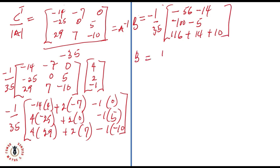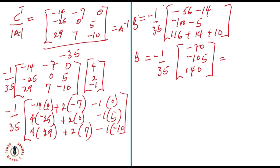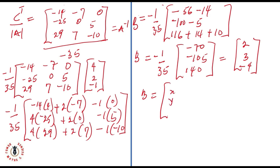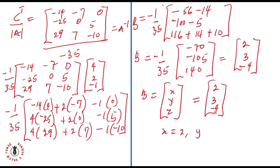So B equals minus 1 over 35 times the column vector [−70, −105, 140]. Dividing: minus times minus 70 over 35 gives 2; 105 over 35 gives 3 with the negative signs cancelling; and finally we have minus 4. So B — which is [x, y, z] — equals [2, 3, minus 4]. Therefore x equals 2, y equals 3, and z equals minus 4.